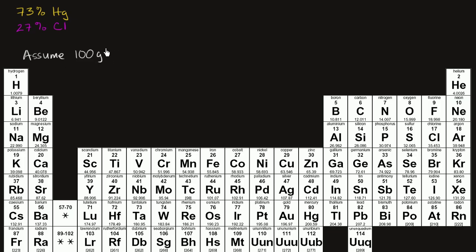And if I assume that, that means that the 73% that is mercury is going to be 73 grams and the 27% that is chlorine is going to be 27 grams of chlorine.